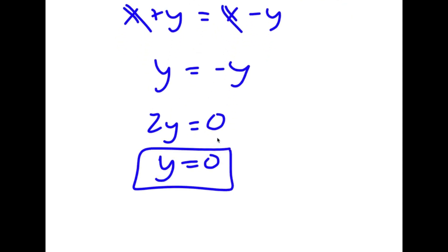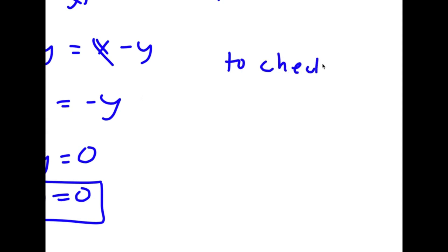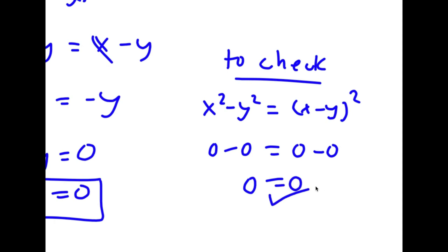Again, I get y equals 0. To check, if both variables are 0, then 0 minus 0 is equal to 0 minus 0 squared, meaning 0 equals 0. Verified.